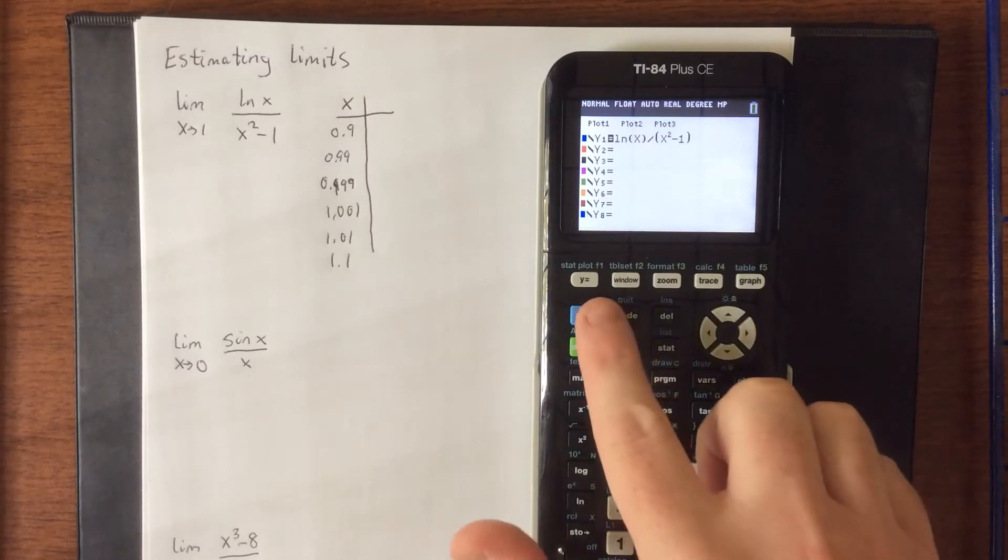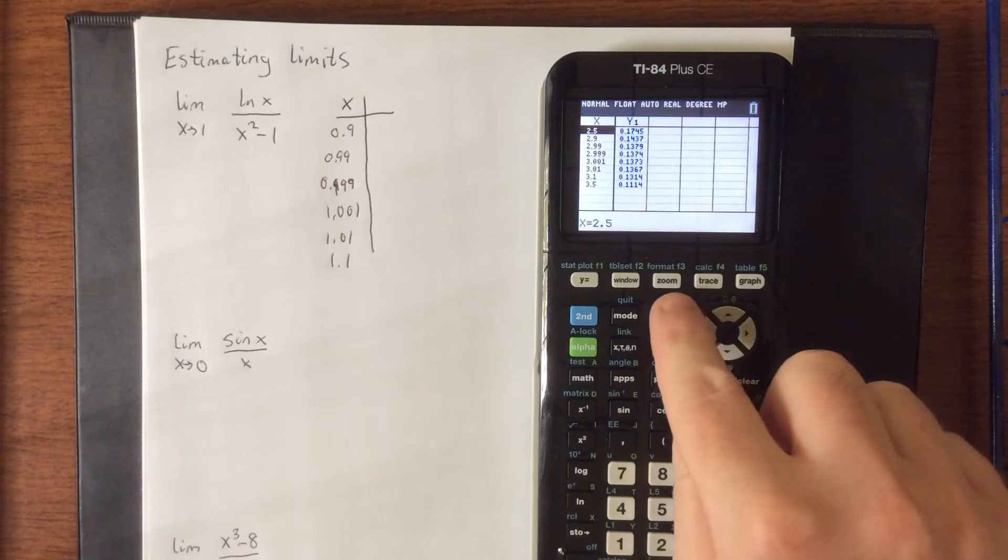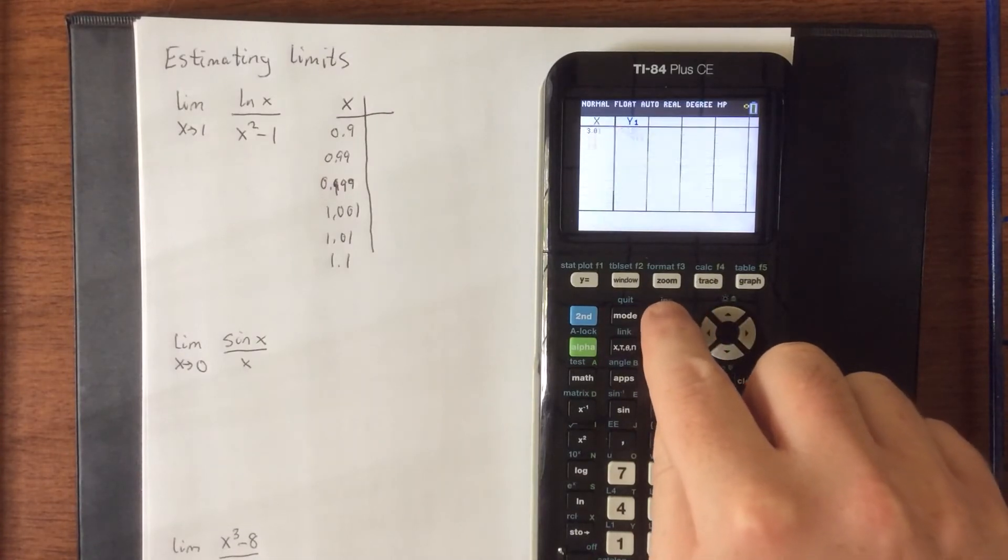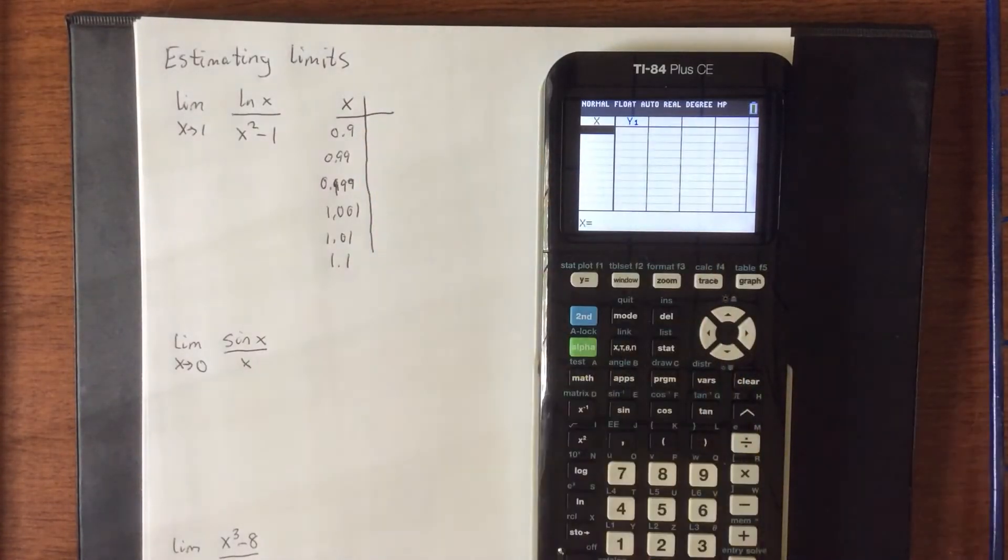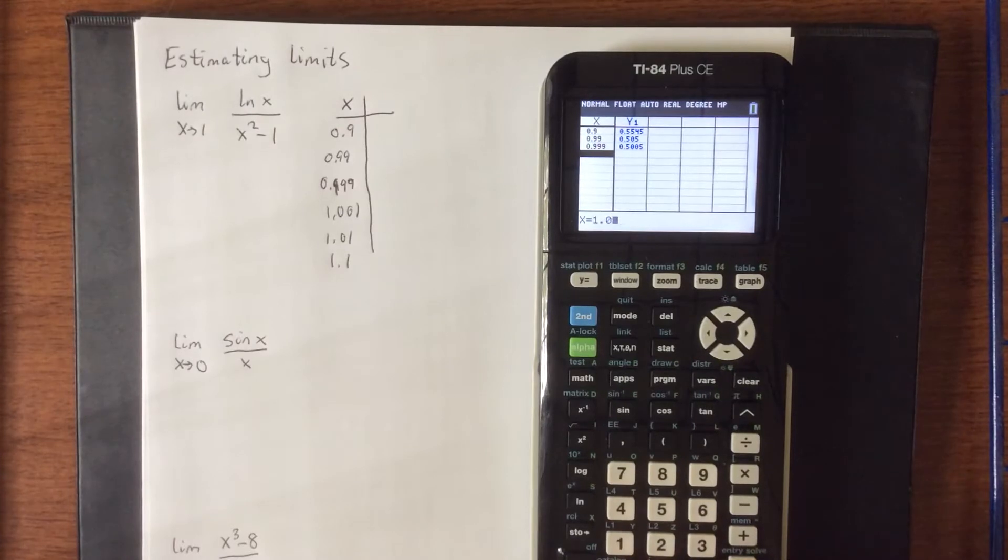So opening up the table feature, second followed by graph to bring up the table, we'll clear out all of the data that was previously in there, and we'll start plugging in these values. It's really just a matter of how quickly can you plug them all in. I'm not saying it's a race, I'm saying I'm winning.